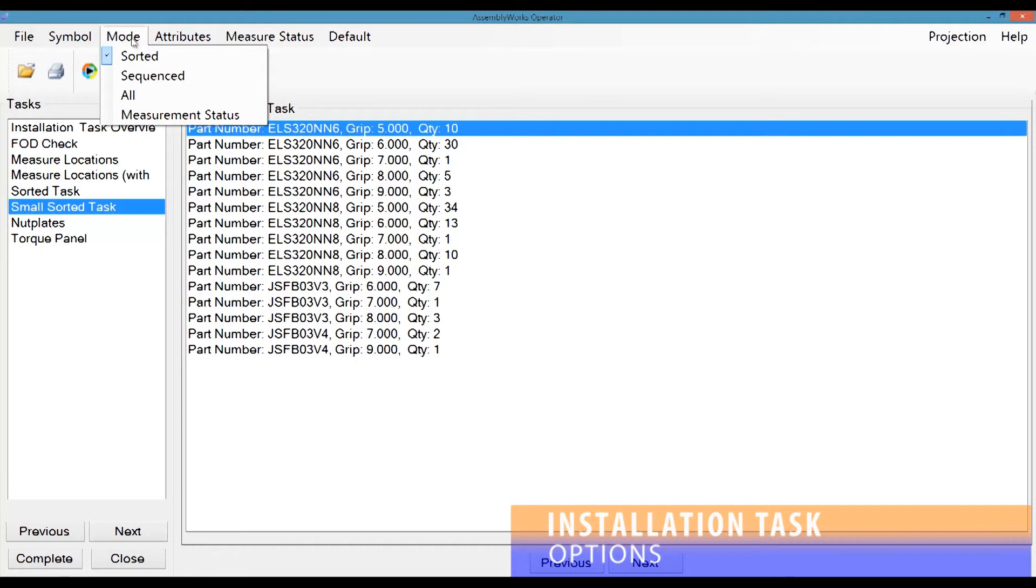Changing between these provides helpful tools, like changing to a show all at the end of a sorted task to verify all locations were installed, or switching to a sequenced mode to get the exact location ID of a problem area that needs adjusting.